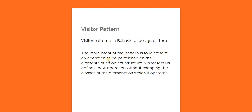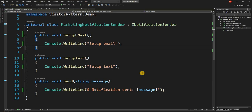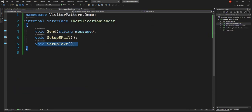Looking back at the intent: 'to represent an operation to be performed on the elements of an object structure' — the operation is SetupEmail or SetupText. The visitor 'lets us define a new operation without changing the classes of the elements on which it operates' — meaning if we take the setup of email and text out of these classes and define it in a visitor class, even if we want a new notification protocol, it will not change our notification sender implementation.